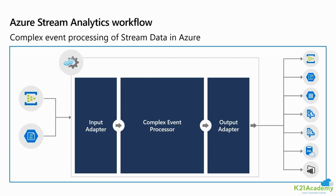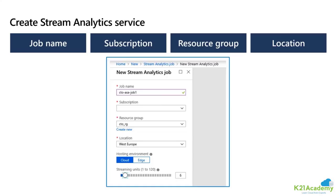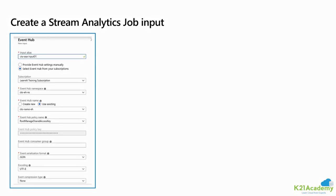The Stream Analytics workflow has three parts: input, query, and output. When creating the Stream Analytics service, we provide a job name, subscription, resource group, location, and the streaming unit — which defines how many MB of data we are processing per second. Once Stream Analytics is created, we configure the job input — specifying where data is coming from, such as Event Hub, IoT Hub, or Azure Blob Storage. We also specify the namespace, which Event Hub to use, the policy for reading, and the data format.